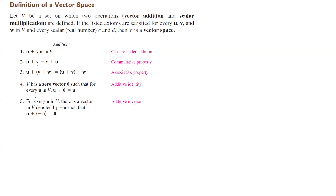For every u in V, you can find another vector in that set, denoted by negative u, and if you add u and negative u together it equals zero. This is called additive inverse. This completes the axioms for addition. We also have axioms for scalar multiplication specifically.